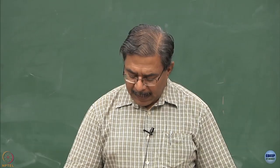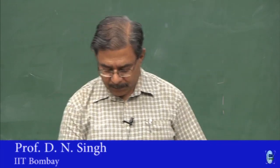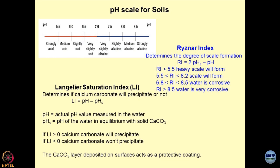The Langelier index (LI) is defined as the pH of the water minus PHS, where PHS is the pH of the water in equilibrium with solid calcium carbonate. This shows how unsaturated the water is in terms of calcium ions. If LI is greater than 0, the pH of the water is more than the pH at equilibration with calcium carbonate.